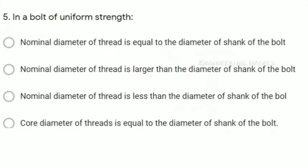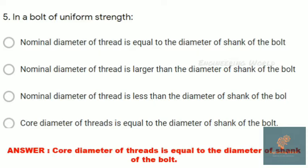Fifth question: In the bolt of uniform strength, the core diameter of thread is equal to the diameter of the shank of the bolt. I will explain what is meant by uniform strength bolt and how core diameter of thread equals diameter of shank.